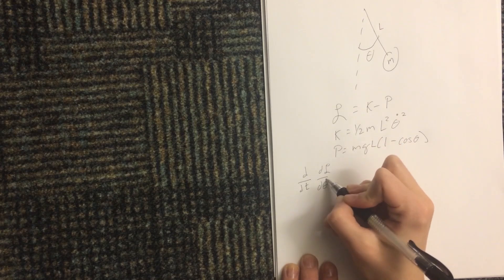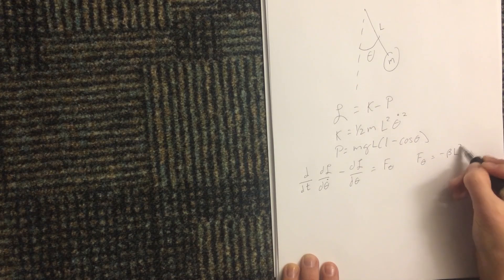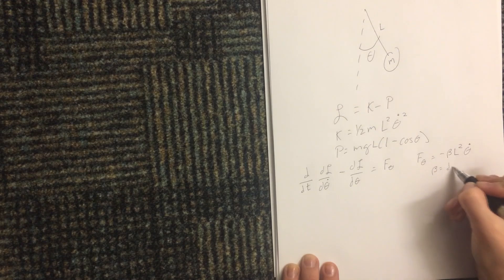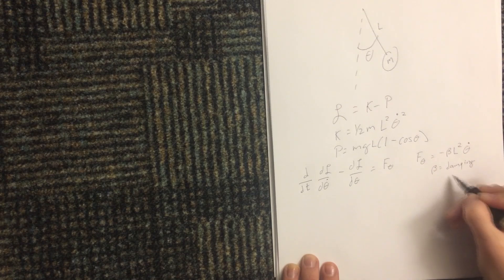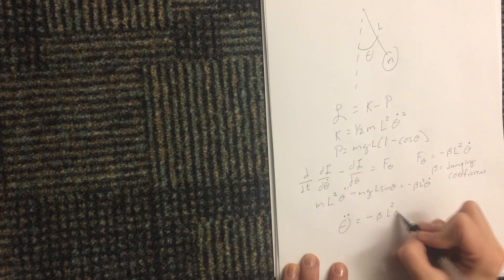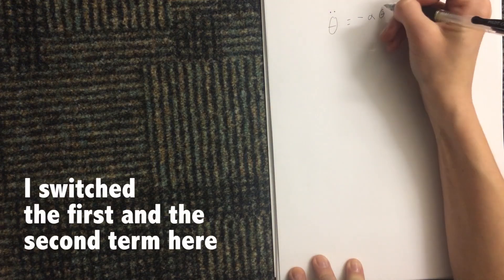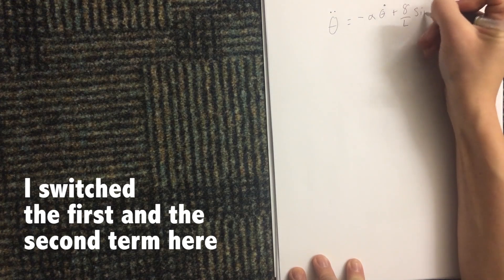Now we can find the acceleration of the pendulum in terms of theta. By setting up a Lagrange equation, we can find the acceleration in theta. The force opposing the acceleration in theta is the damping force, which is negative beta (the damping coefficient) times L squared times theta dot. So we find our equation of acceleration. The first term is due to the force of gravity acting on the bob, and the second is from the damping force acting in the opposite direction of the bob's motion.